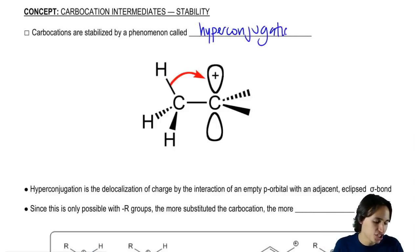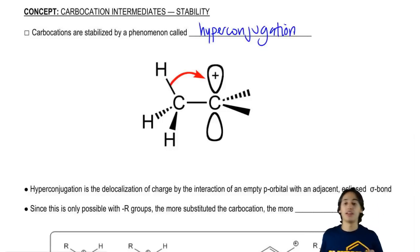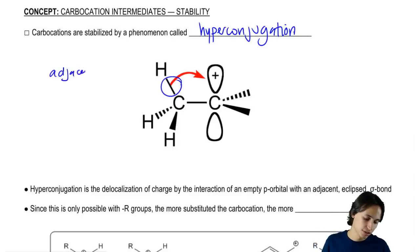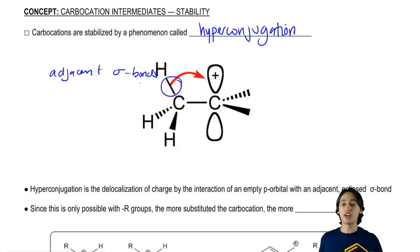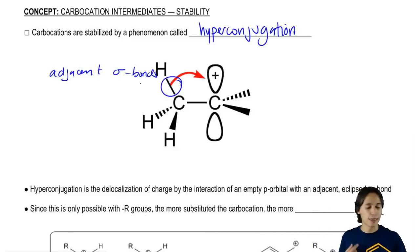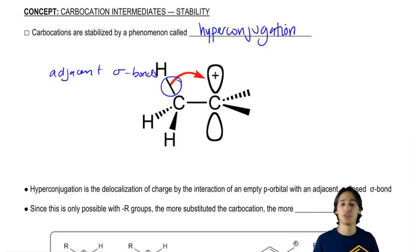What hyperconjugation says is that the electron density from neighboring sigma bonds, so adjacent sigma bonds can share electron density with the carbocation, with that empty orbital.